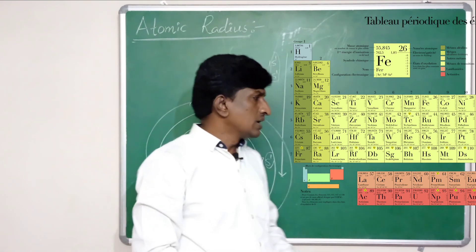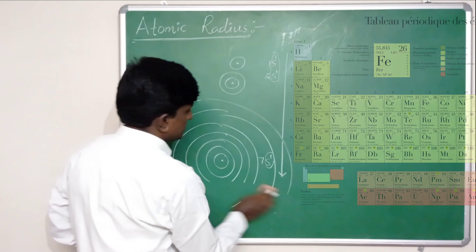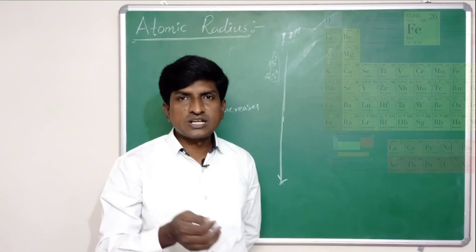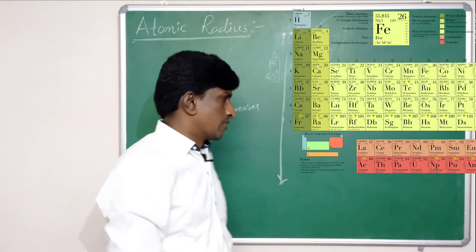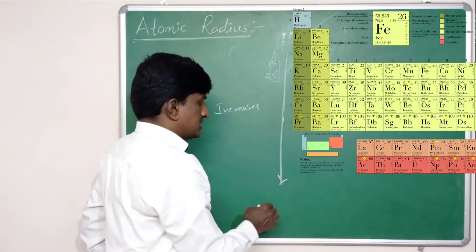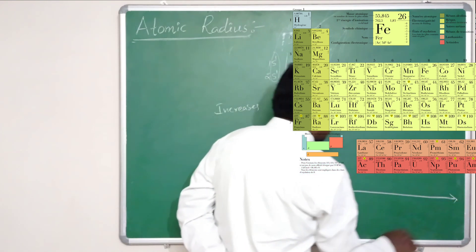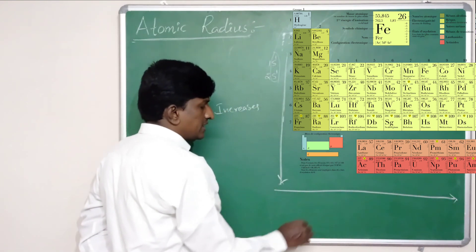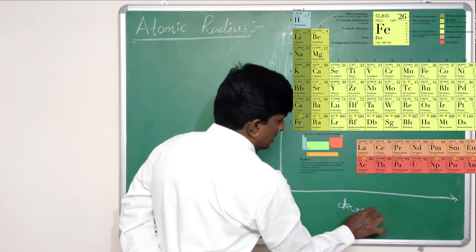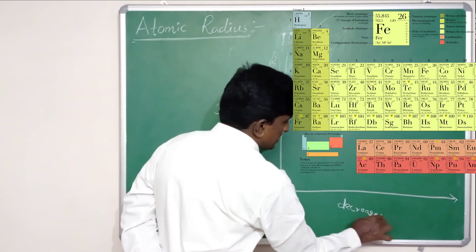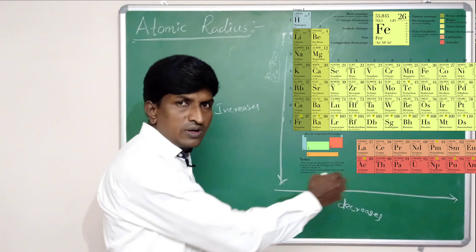Now, how does the atomic radius vary in periods? The variation of atomic radius in periods: from left to right as we move in a period, the atomic radius decreases.